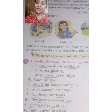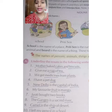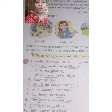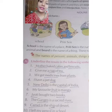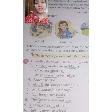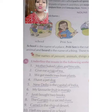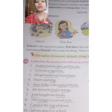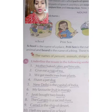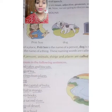Next: 'I have a pet dog.' Dog is an animal, so it is a noun. 'New Delhi is the capital of India' — New Delhi, capital, and India are all nouns. 'My favorite fruit is mango' — fruit and mango, underline those. 'Jyoti bought two books' — Jyoti is a name of a person and books is also a noun. Like this, you will do all these sentences in your books.